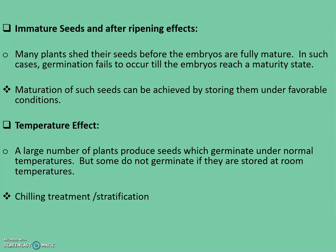Temperature effect: A large number of plants produce seeds that germinate under normal temperatures, but some do not germinate if stored at room temperatures. Many seeds require a period of low temperature ranging from 0 to 10 degrees Celsius to germinate — in temperate-sown species this is an obvious survival value, since seeds will not germinate in fall but only in the following spring. Chilling seeds to break dormancy is referred to as stratification. In agricultural practice, dormant seeds are layered in mounds of soil or moist sand; today seeds are simply stored moist in a refrigerator. Stratification also has the added benefit of synchronizing germination, ensuring plants will mature at the same time.